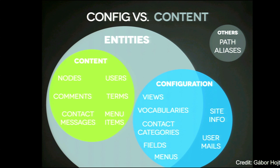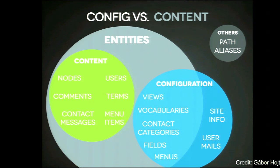Here's a helpful Venn diagram that tries to show the relationship between configuration and content. Content entities like nodes and comments are not stored in configuration. But all the things in the lighter blue are stored in configuration — they include configuration entities like views, vocabularies, contact forms, menus, and simple configuration like site info and user mails. There are a few things that still live outside, like path aliases, which we didn't get around to.